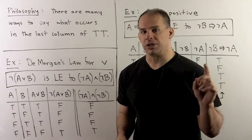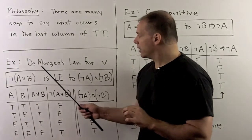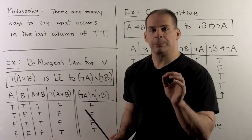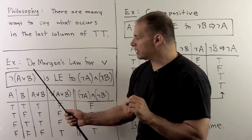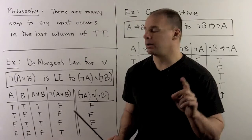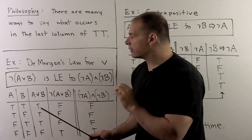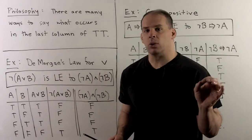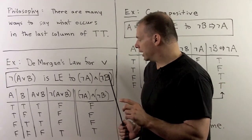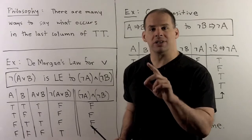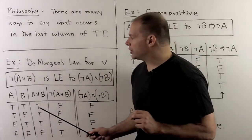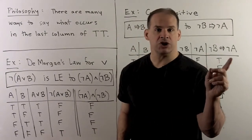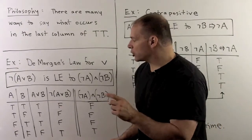For another example, we have De Morgan's Law for OR, and we'll also have De Morgan's Law for AND — the same statement but with the positions of OR and AND switched. Specifically: not(A or B) is logically equivalent to not-A and not-B. So when we push the negation through, it switches the OR to an AND. Let's check this by setting up our truth table.